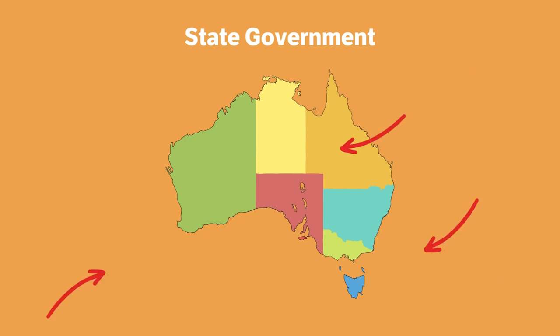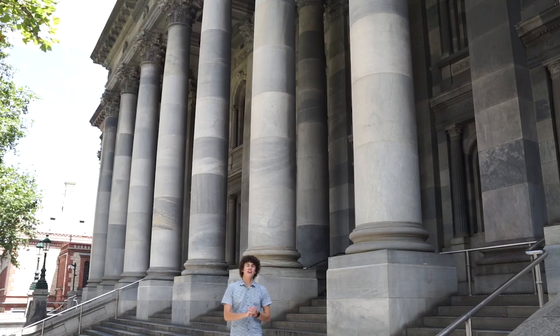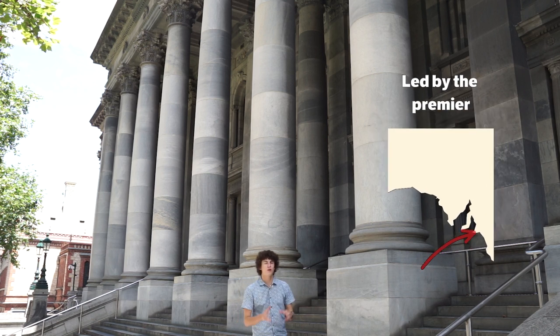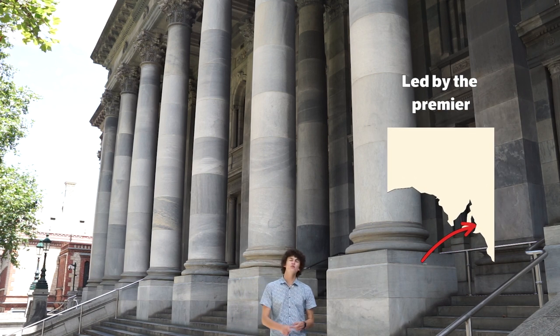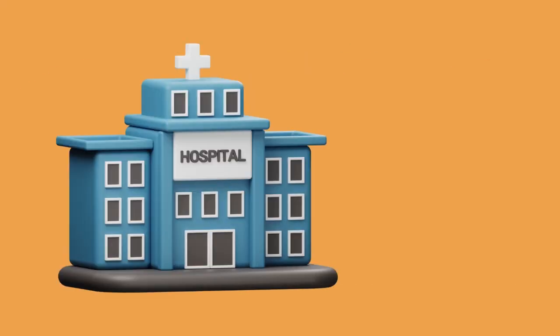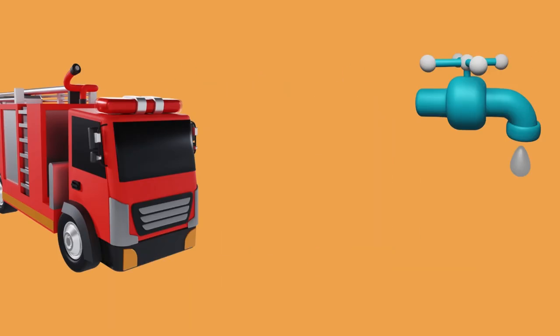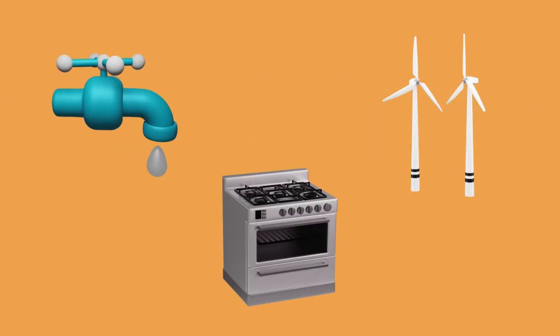The state government is the second level of government. There are six of these around Australia, one in each state plus two territory governments. In South Australia the state government is run by the Premier and they all meet here at Parliament House in Adelaide. The state government looks after things like schools, hospitals, public transport, emergency services and utilities that we use every day.